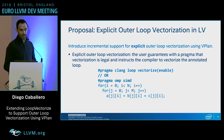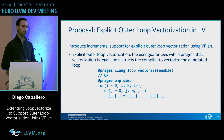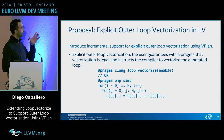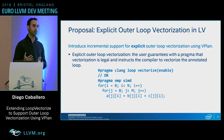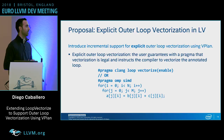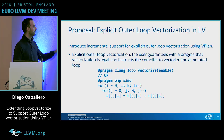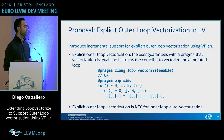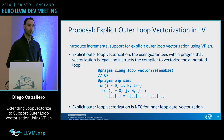The proposal: incremental support for explicit outer loop vectorization using vPlan. Explicit means the user must introduce a pragma telling the compiler that vectorization of this outer loop is legal, which also instructs the compiler to vectorize it. We can annotate with pragma OMP SIMD or enable pragma clang loop vectorize. This explicit approach won't change the current behavior of the inner loop autovectorizer.